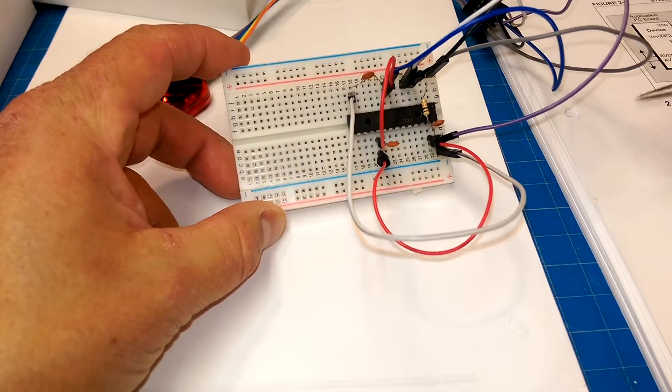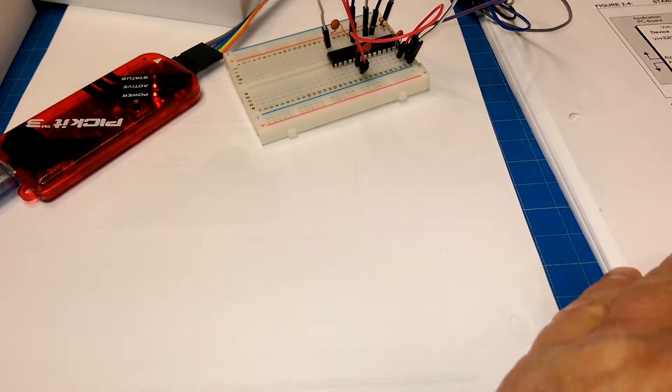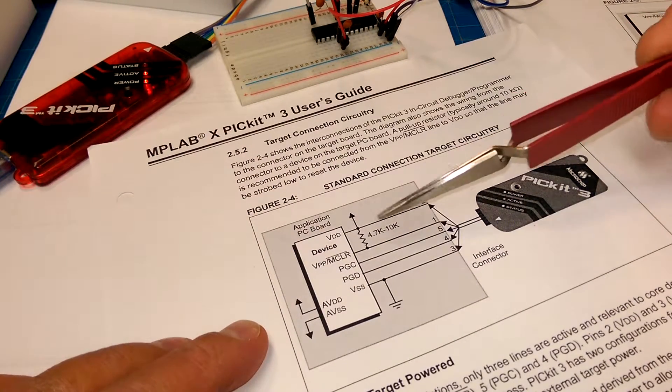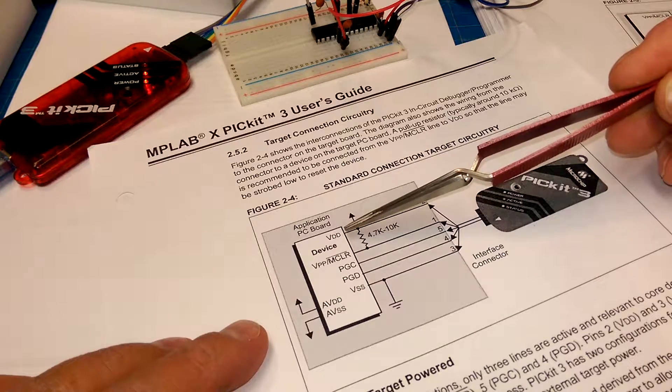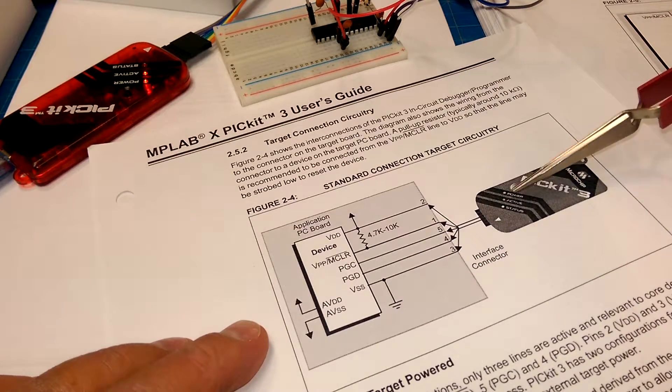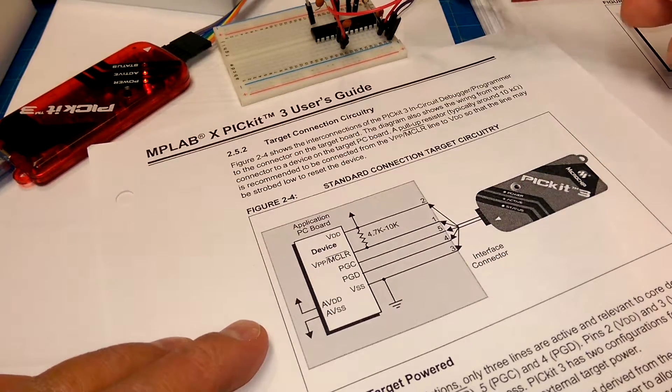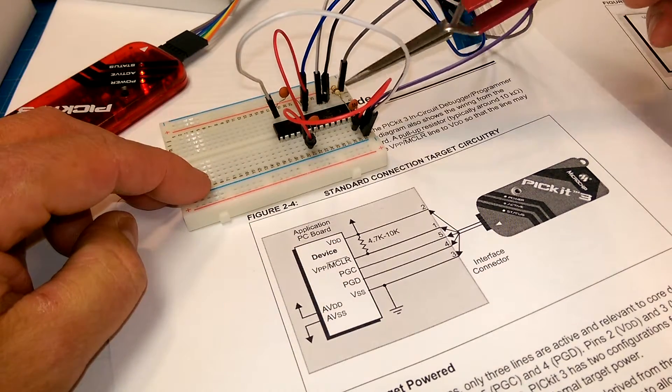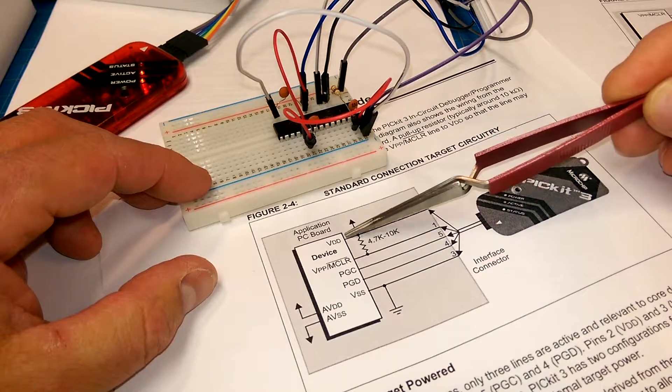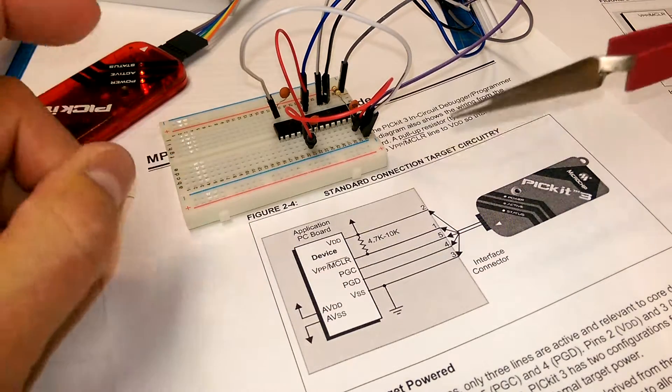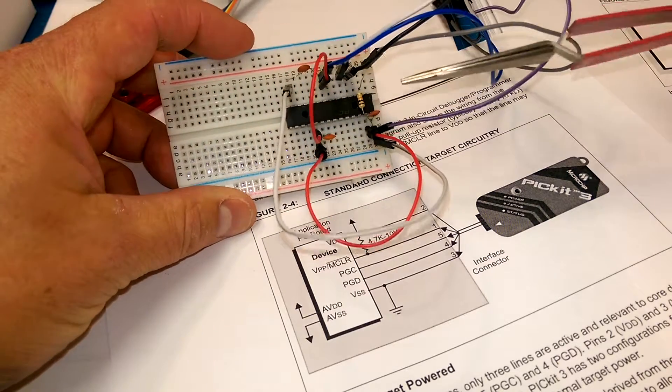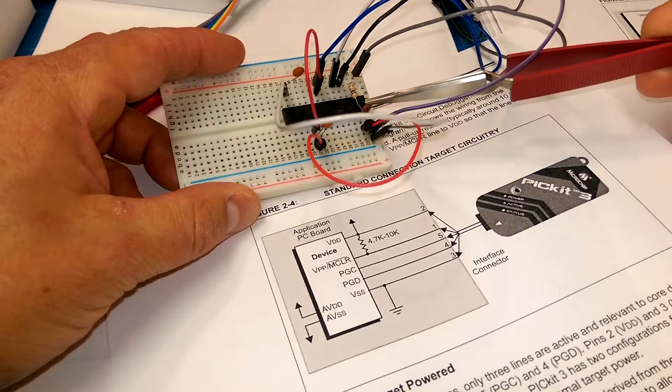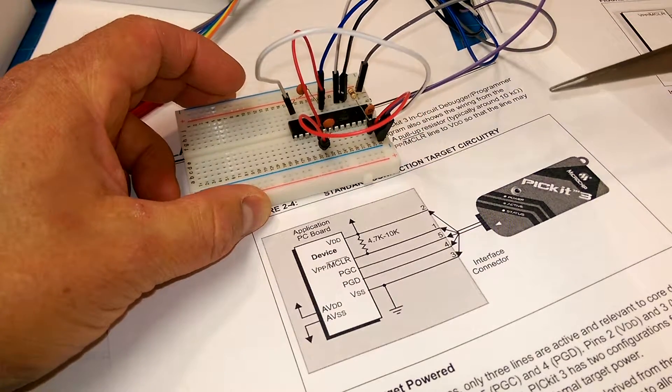Beyond that, there is a diagram that they provide for the PICkit3 to tell you about how you're supposed to connect up your microcontroller to your PICkit3. And they include a resistor that goes from your reset pin to your VDD. What they neglect to inform you of is that you need bypass capacitors across a number of other pins.